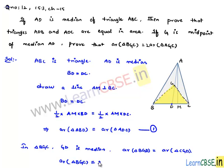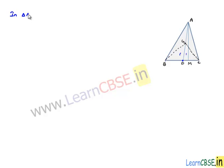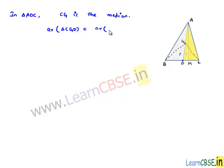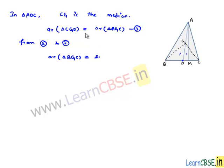Therefore, area of triangle BGC is equal to 2 times area of triangle CGD, since both areas are equal. Let this be equation number 2. Now in triangle ADC, G is the midpoint of AD, so CG is the median. From the above proof, area of triangle CGD equals area of triangle AGC — let this be equation 3. From equations 2 and 3, area of triangle BGC equals 2 times area of triangle AGC. This is the required proof.